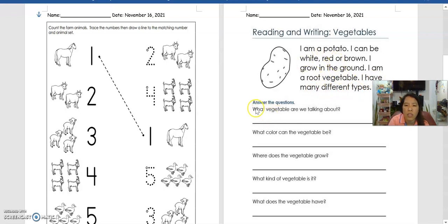After reading this, we're going to answer the questions below. First, what vegetables are we talking about? You have to look for the vegetable. Then what color can the vegetable be? Next, where does the vegetable grow? Take your answer from here. Question number three, what kind of vegetable is it?